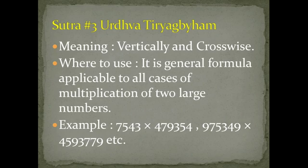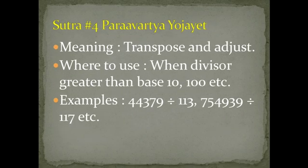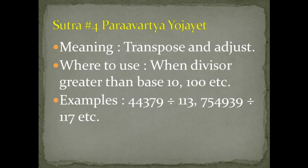Sutra 4 is Paravartya Yojyat, meaning 'transpose and adjust' — or you can say 'transpose and apply.' We can use this Sutra in division where the divisor is greater than or near to a base like 10 or 100. For example, 44379 divided by 113 — you can see that 113 is near to base 100 and is greater than 100. Or you can use it to check if 754939 is divisible by 117, because 117 is near to base 100 and is greater than 100.